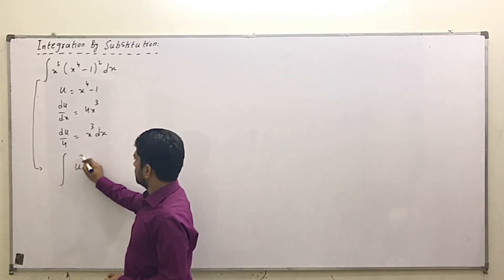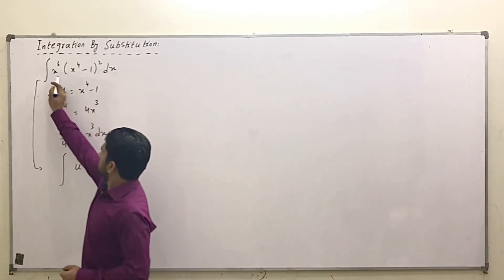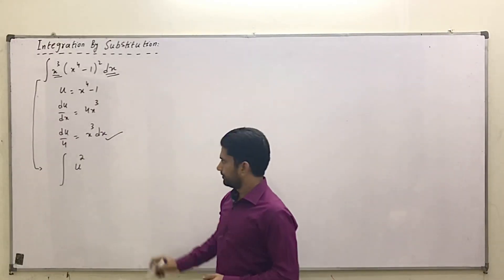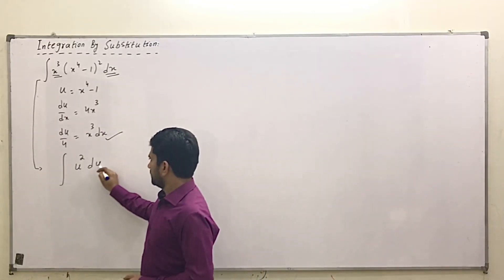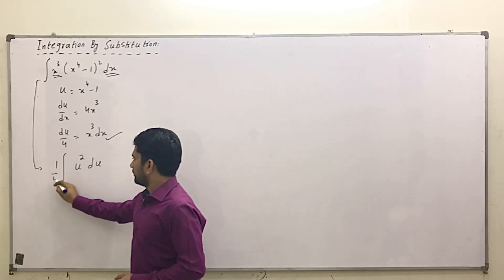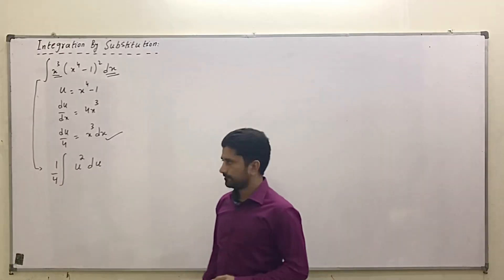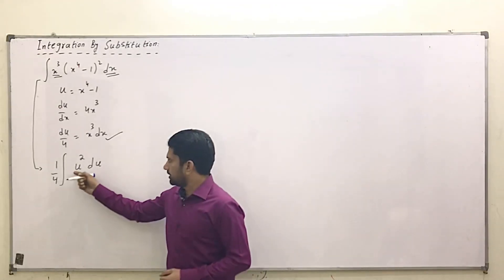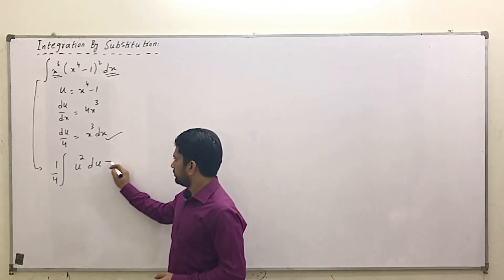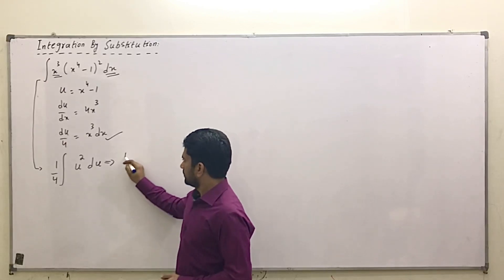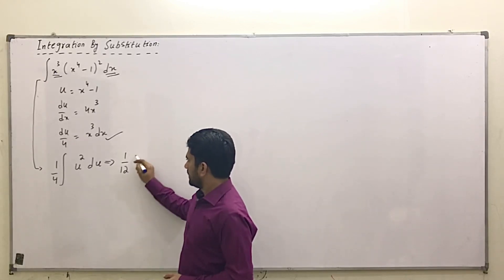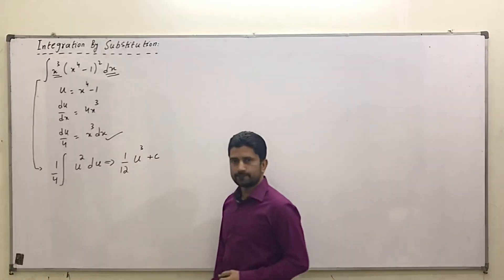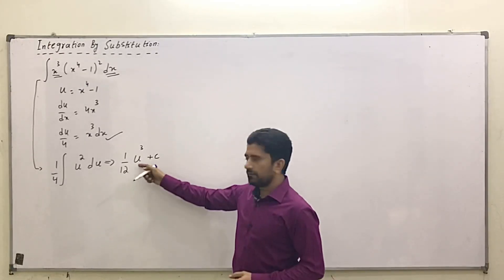Since u = x⁴ - 1, we have u². This x³ dx equals du/4, so du goes here and 1/4 goes outside the integral. Now according to the integral formula, the integration of u² will be u³/3.